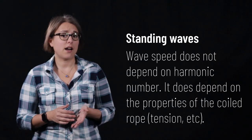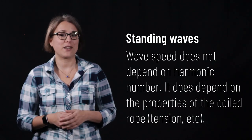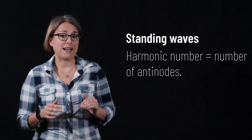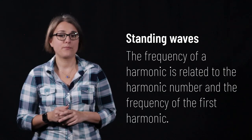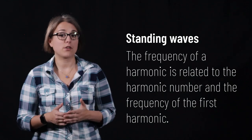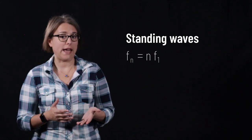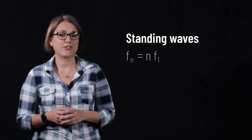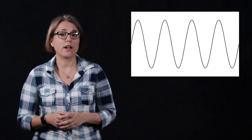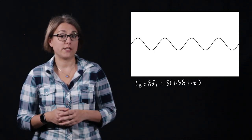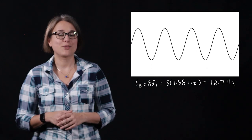Note that the wave speed is relatively constant for all of the standing waves — the speed of the wave has to do with the properties of the coiled rope used to generate the standing waves. The harmonic has to do with the number of anti-nodes, and as the harmonic number increases, so does the frequency. In fact, the frequency of the nth harmonic is equal to n times the frequency of the first harmonic. The eighth harmonic would be difficult to generate, but using this equation — with the first harmonic at 1.58 hertz — multiplying by 8 gives a frequency of 12.7 hertz for the eighth harmonic.